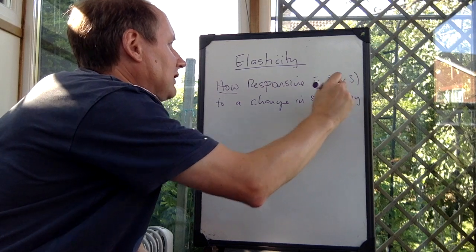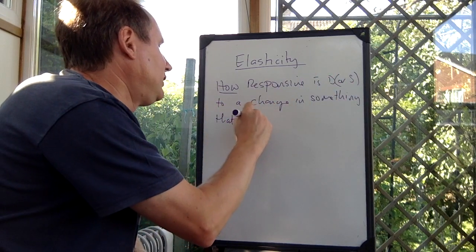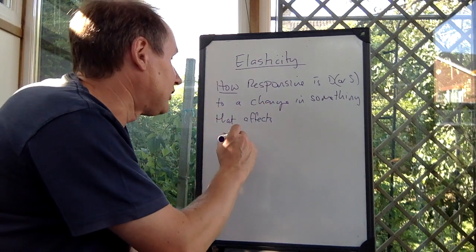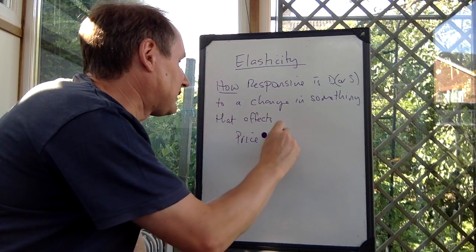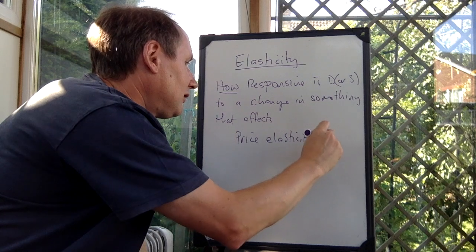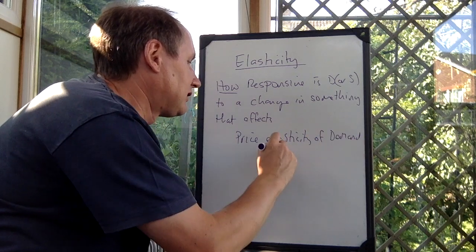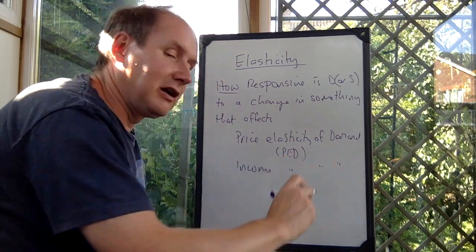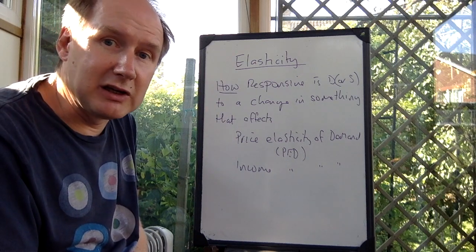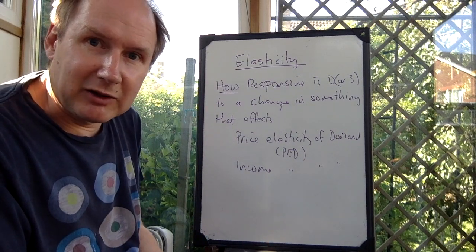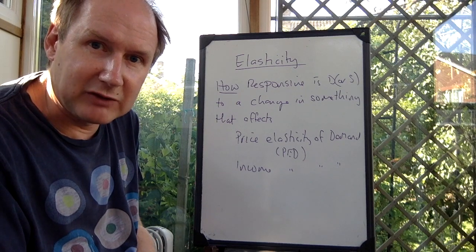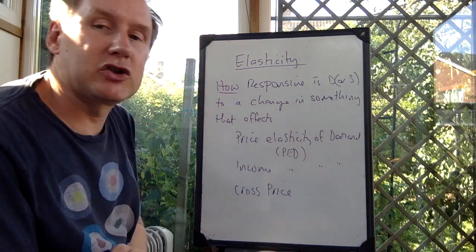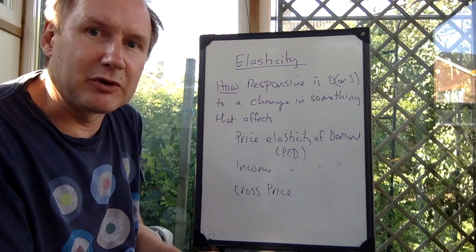What that means is that there are lots and lots of different elasticities. So if we're looking at the responsiveness of demand to a change in price, then we would have price elasticity of demand — that would show how responsive demand is to a change in price. Or we could have income elasticity of demand, which would show how responsive demand is to a change in income. Or we could have advertising elasticity of demand, which would show how responsive demand is to a change in advertising. Or we could have what's called cross-price elasticity, which shows how responsive demand is to a change in the price of other goods and services.